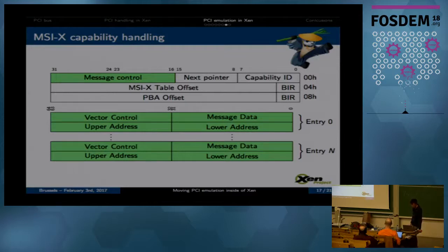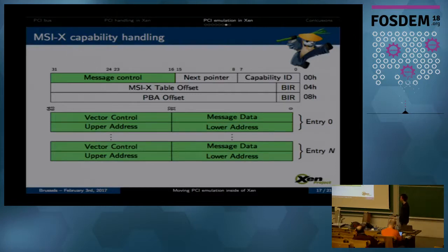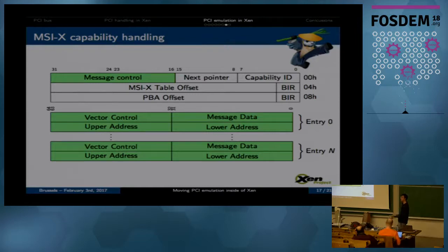We are also tracking access to the MSI-X capabilities. This is fairly similar to the MSI structure. The only difference is that instead of having global message address and message data, we have one entry for each interrupt vector. Another difference is that the part residing in configuration space is very small - just the message control field and two fields that point to a memory address outside of the configuration space. This is done because the MSI-X table is quite large, so placing it inside the configuration space would overflow the available space.